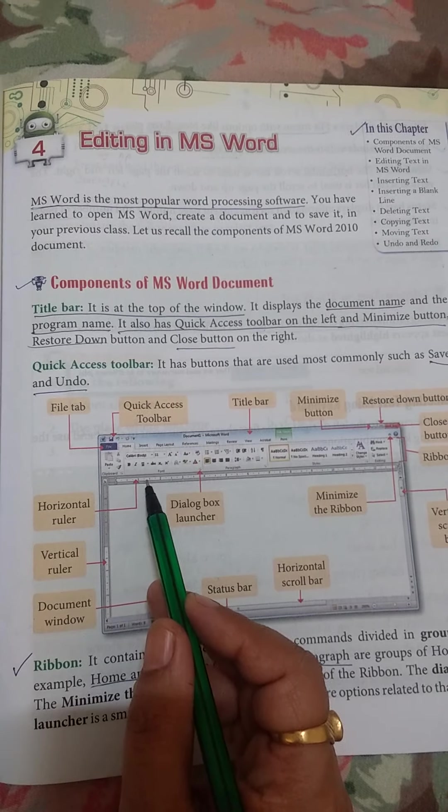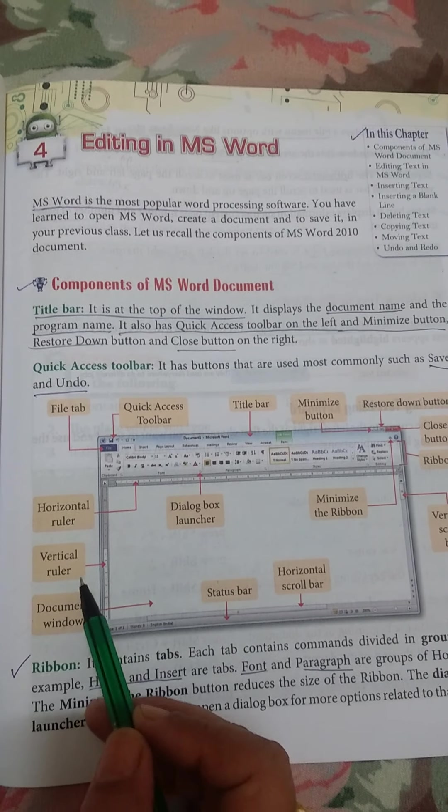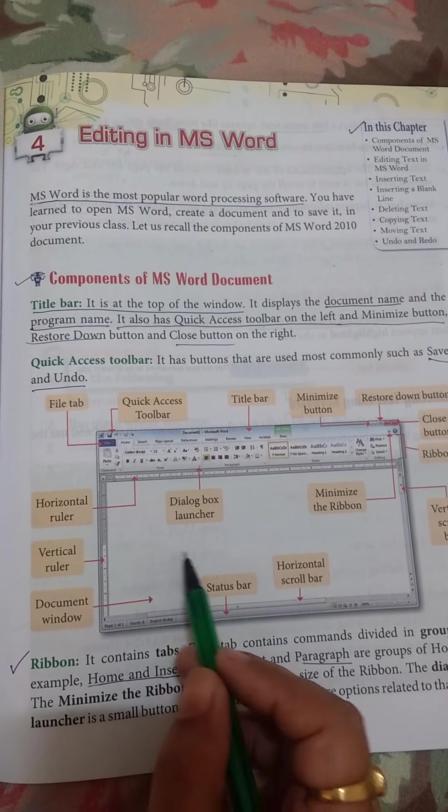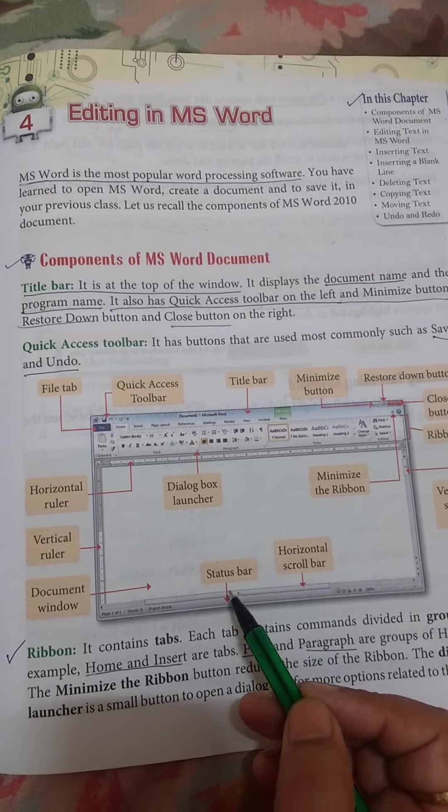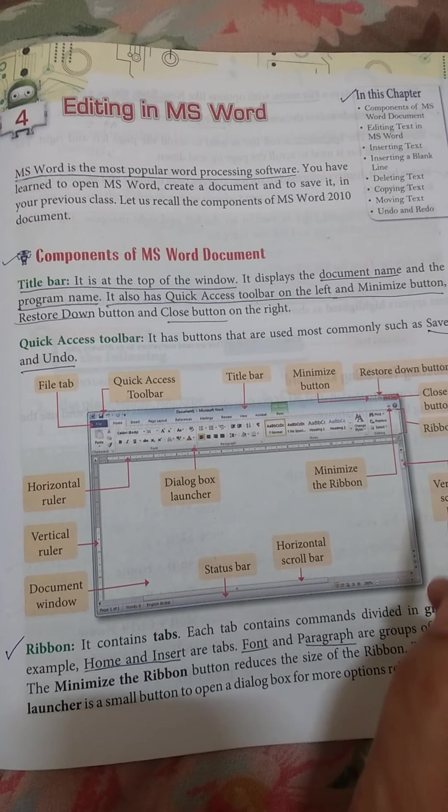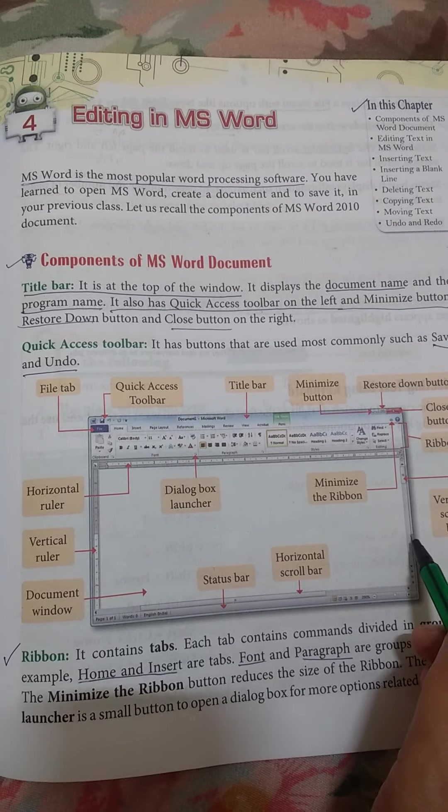This is horizontal ruler. This is vertical ruler. This is document window where we type. This is status bar. This is horizontal scroll bar and this is vertical scroll bar.